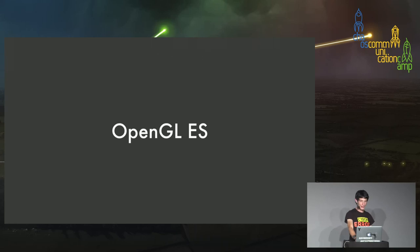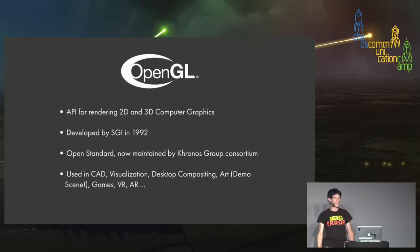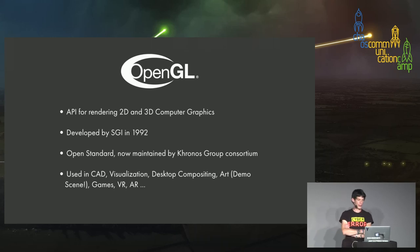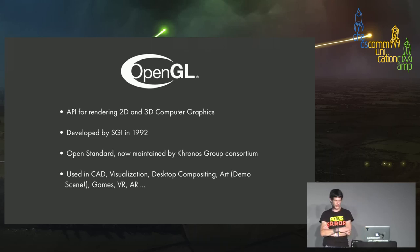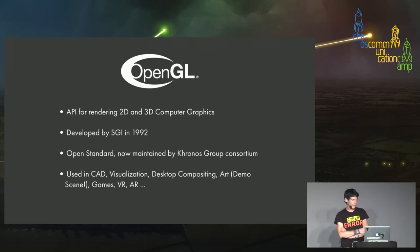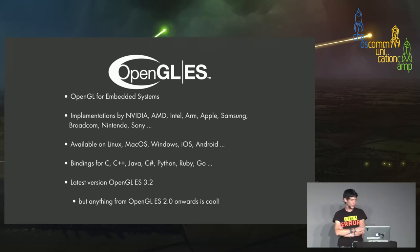OpenGL — Open Graphics Library — is an API for rendering 2D and 3D computer graphics. Like all good things, it was invented in the 1990s, developed by Silicon Graphics Incorporated. Nowadays it's an open standard maintained by the Khronos Group consortium, and it's used all over the place: computer-aided design, visualizations, desktop compositing, the effects on macOS and iOS, machine art, games, virtual reality, and augmented reality. Lots of abstraction layers like Unity 3D exist, but it all boils down to OpenGL eventually. OpenGL ES is OpenGL for embedded systems.